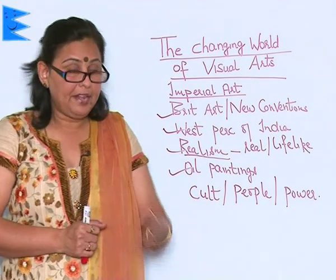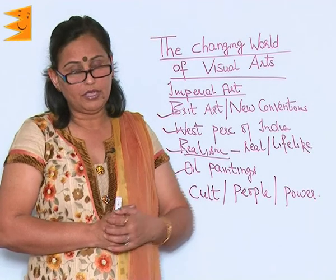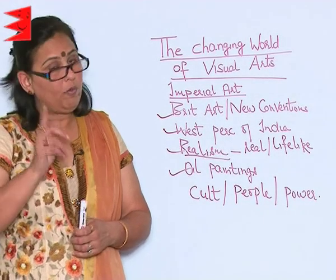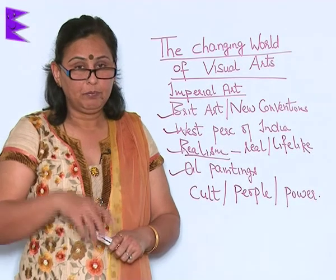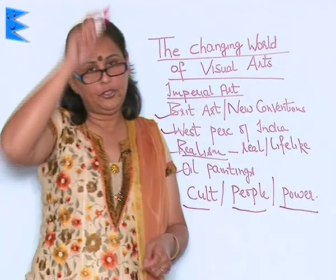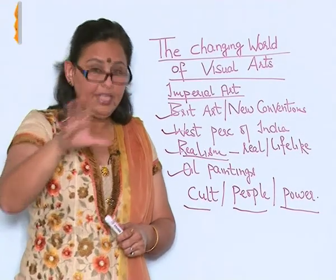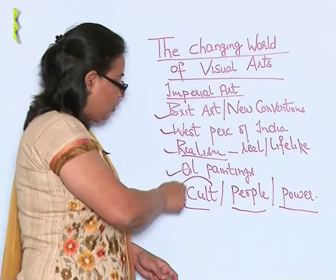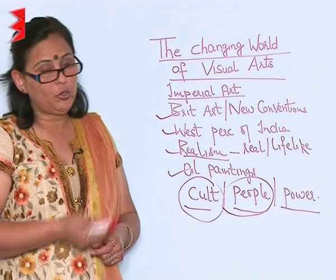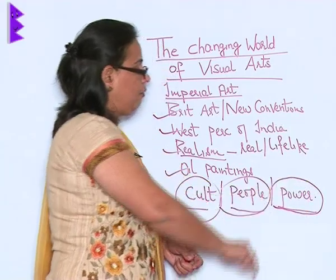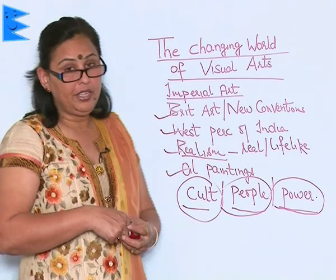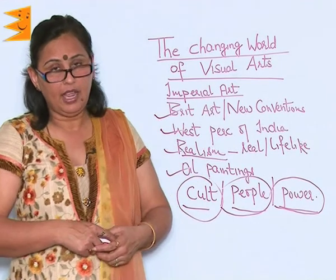Various artists produced various kinds of paintings on various subjects, but all of them had one similarity — they always kept the British culture, its people, and power at the top. These imperial artists believed that the culture of Britain was superior to Indian culture, that the people of Britain were superior to Indian people, and that British power was definitely superior to that of the Indians. That was the concept of the new artists who came along with the traders and rulers to India.